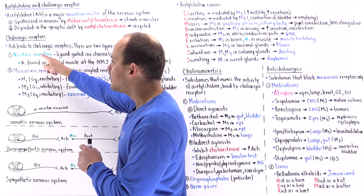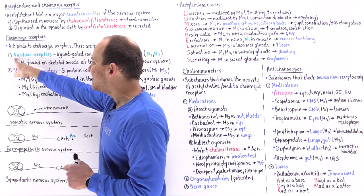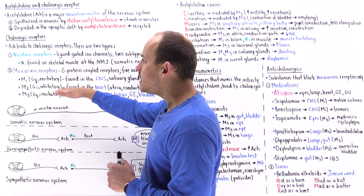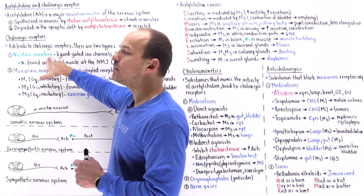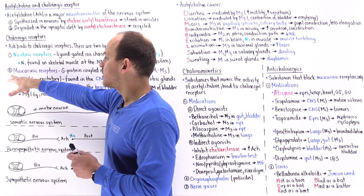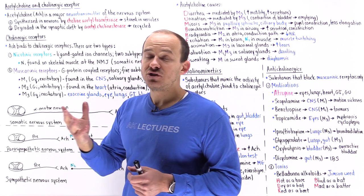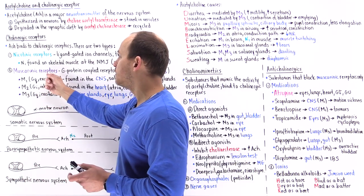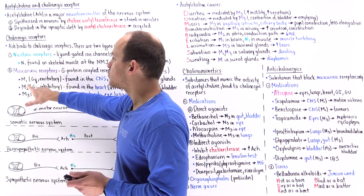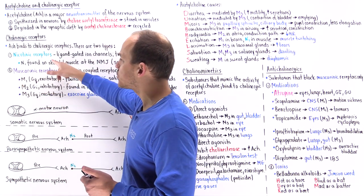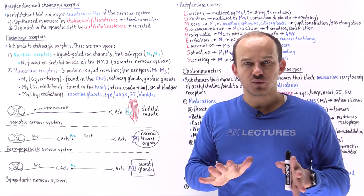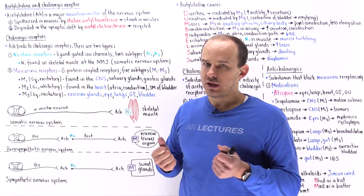Don't get confused by the names. We call these nicotinic receptors because back in the day when we were studying them, nicotine was able to bind to these receptors. Likewise, we found that an agent called muscarin was also able to bind to muscarinic receptors. But really, these are just two different types of cholinergic receptors — they both bind acetylcholine.